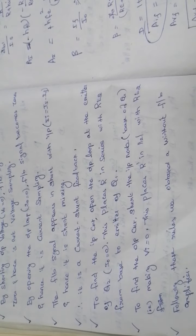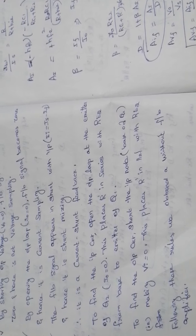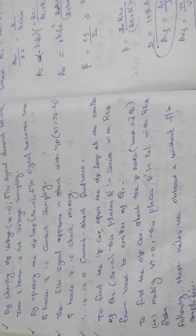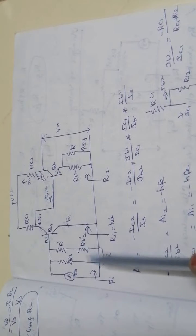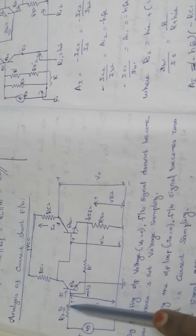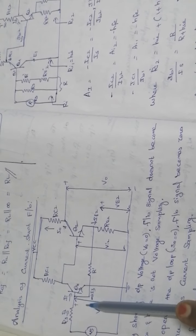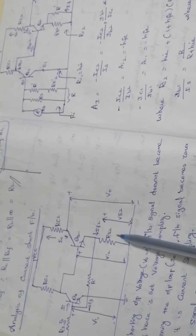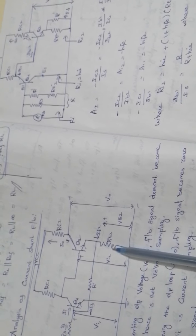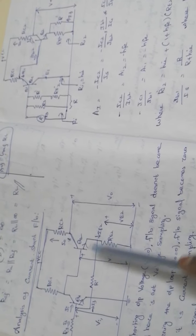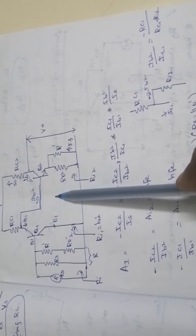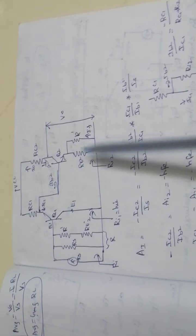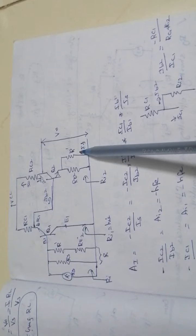To find the voltage gain of current shunt feedback, as well as the desensitivity factor, feedback factor, input resistance, and output resistance. This is the equivalent circuit of the given circuit diagram. The feedback resistance is common to both output and input. By using Miller's theorem, this resistance is separated into an input resistance and an output resistance. That R' resistance is connected in series with Re2 at the input side, and R' is connected in parallel at the output side.